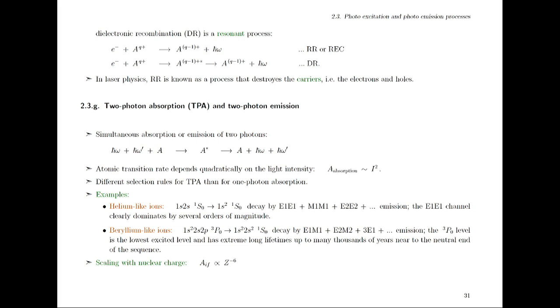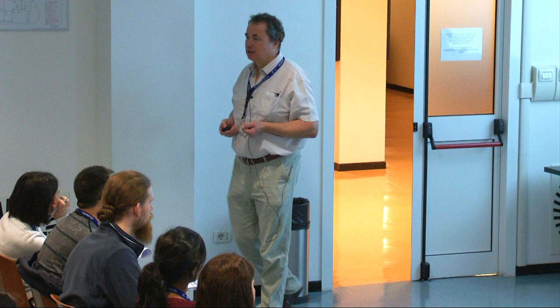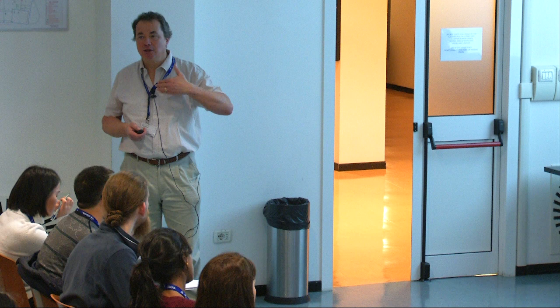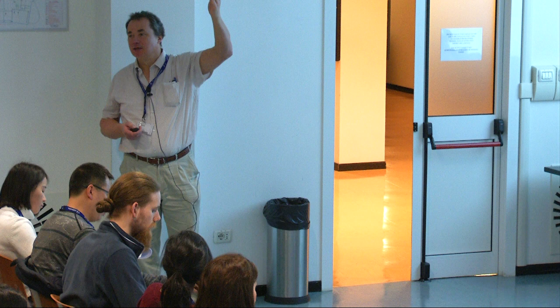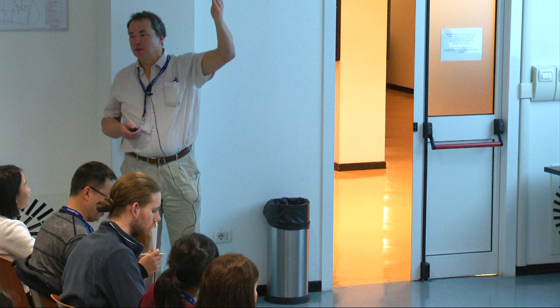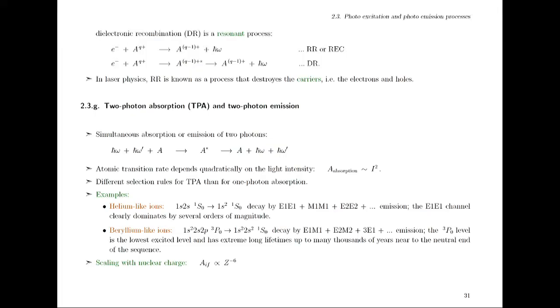Because we have two photons, the theoretical treatment requires at least a second-order process, which always means in perturbation theory one summation over the complete spectrum. For hydrogen, this means summing over all possible states. For every multi-electron system it becomes more sophisticated, because one has to distinguish between different continua due to the symmetries of how you couple the electrons — and this may become a very complex and cumbersome thing to do in practice.